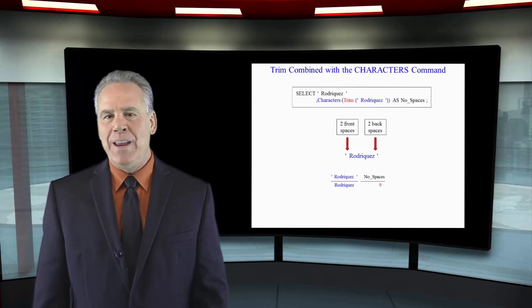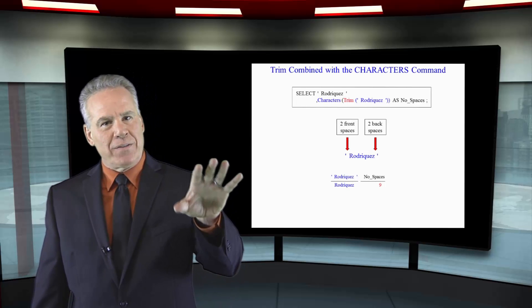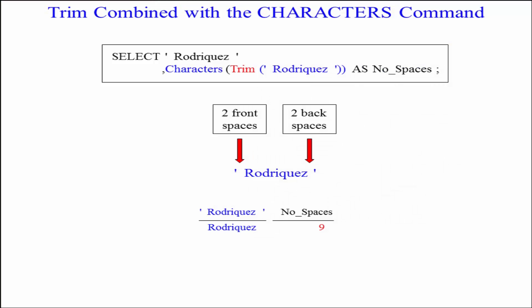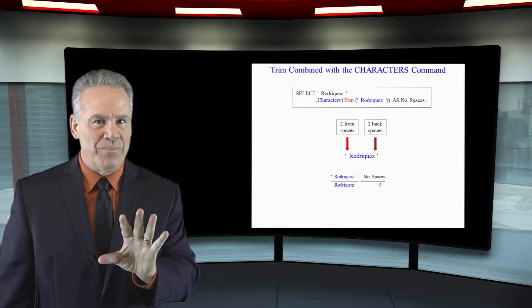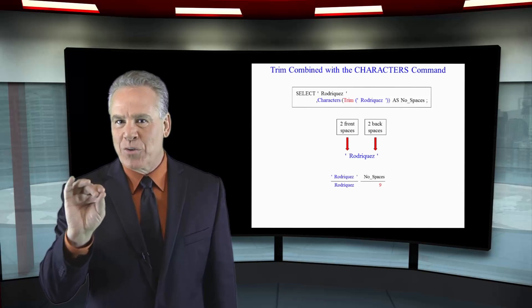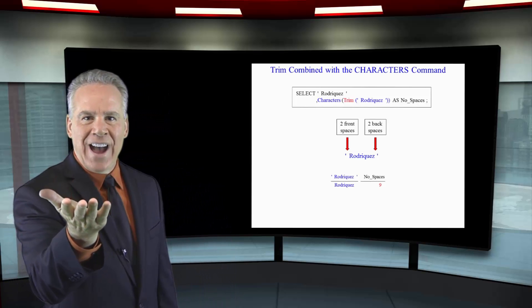Now I've taken the name Rodriguez and I've put a space in front of it and behind it. I'm selecting a literal Rodriguez with those spaces and it's going to print the name Rodriguez on the report. Then I did a character count but I trimmed Rodriguez. The answer for the second column is going to be 11 before the trim, and then after trimming those spaces, we will get nine characters back.